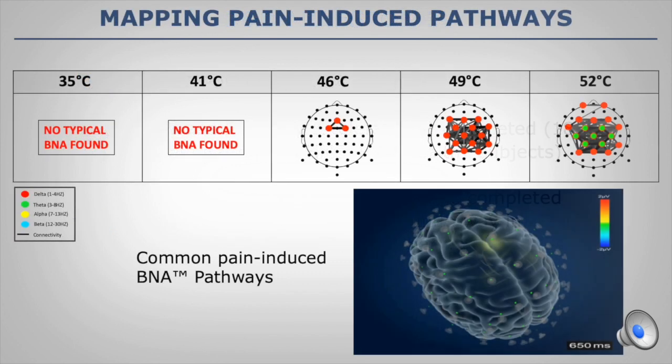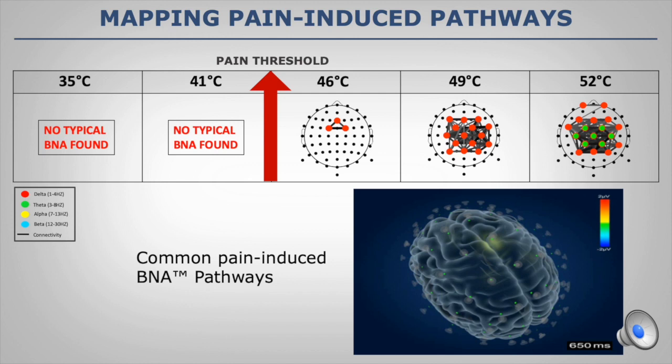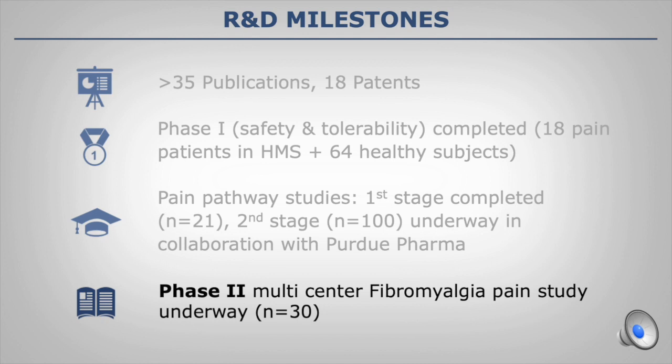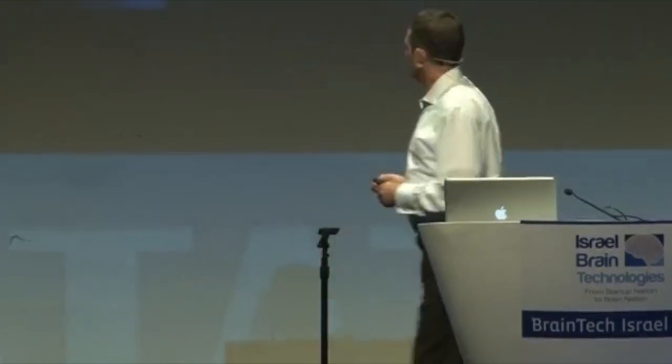One example of our studies is mapping pain-induced pathways associated with heat pain: the more you increase the heat, the more you increase pain, and we model those common pain network pathways to inform later treatment protocols. We have now started a phase two clinical trial and are enrolling — five initial patients have already completed. The study focuses on fibromyalgia pain, a very complex pain. To give a sense of what fibromyalgia pain is like, let's look at a patient.